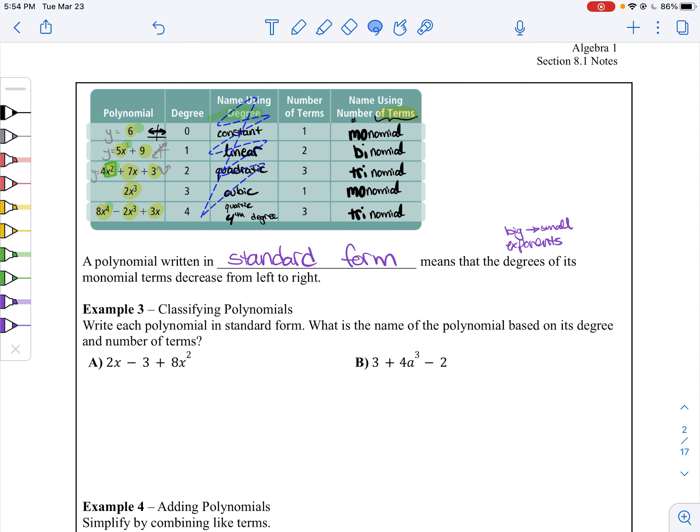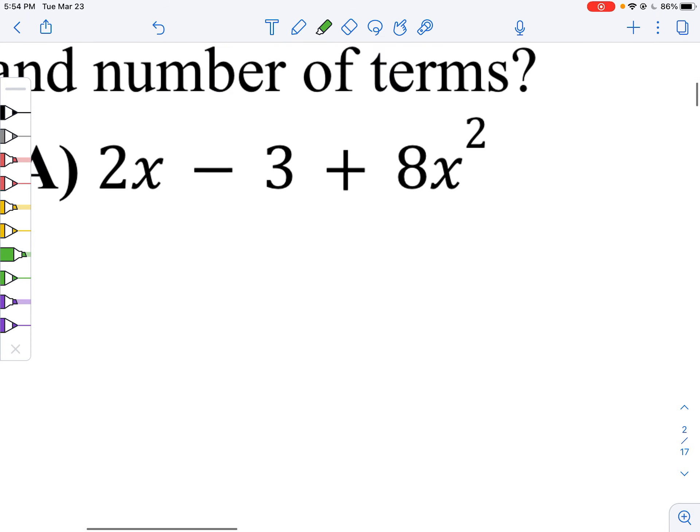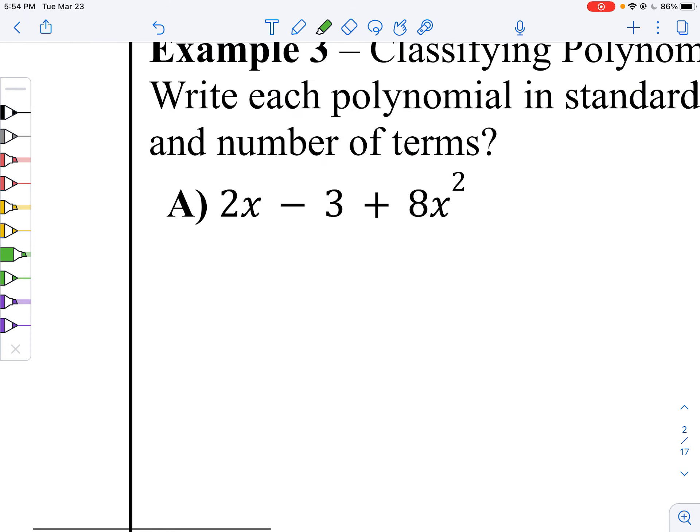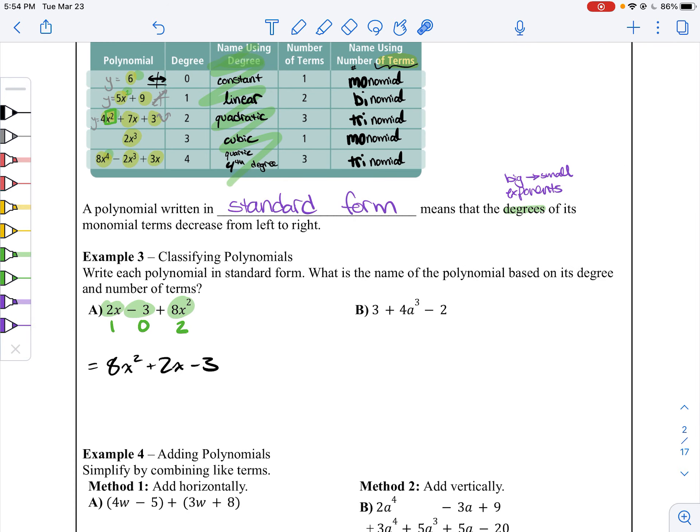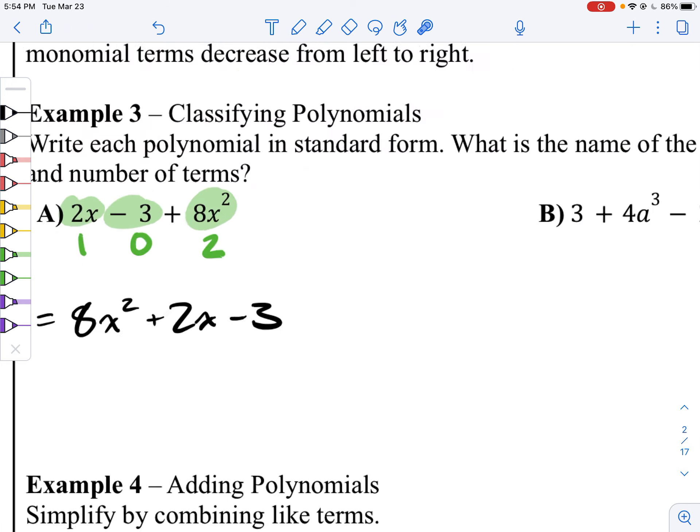For example, here we just need to look at the exponents. We're going to start out, this guy has a degree of two, this guy over here has a degree of one, this guy right here has a degree of zero. So, putting them in order it's x squared plus 2x minus 3. And that's it. This is nice because you can easily identify what kind of polynomial this is.